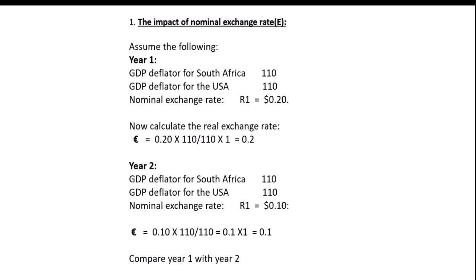Let's look at the impact of the nominal exchange rate with an example. In year one, the GDP deflator for South Africa is 110, the GDP deflator for the USA is 110, and the nominal exchange rate is 1 rand equals 0.2 dollars. The GDP deflator is a tool used to measure prices over a period of time for all goods and services. To calculate the real exchange rate, we use: nominal exchange rate E times domestic price P divided by foreign price P*.